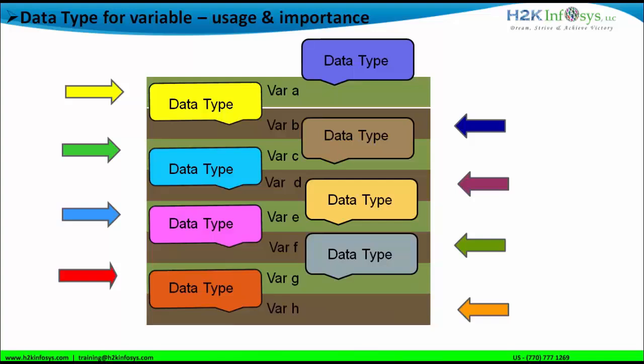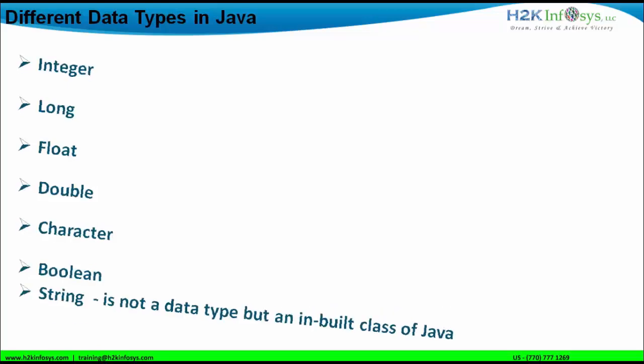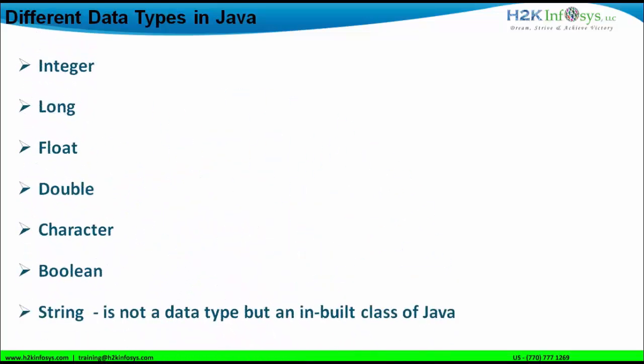The different data types present in Java are: integer data type, long data type, float data type, double data type, character data type, boolean data type, and string type. String is not considered a data type — string is an inbuilt class of the Java language, so it is not considered a data type; we can express it as string type. We can declare a variable as a string type, or as a boolean, character, double, float, long, or integer data type.